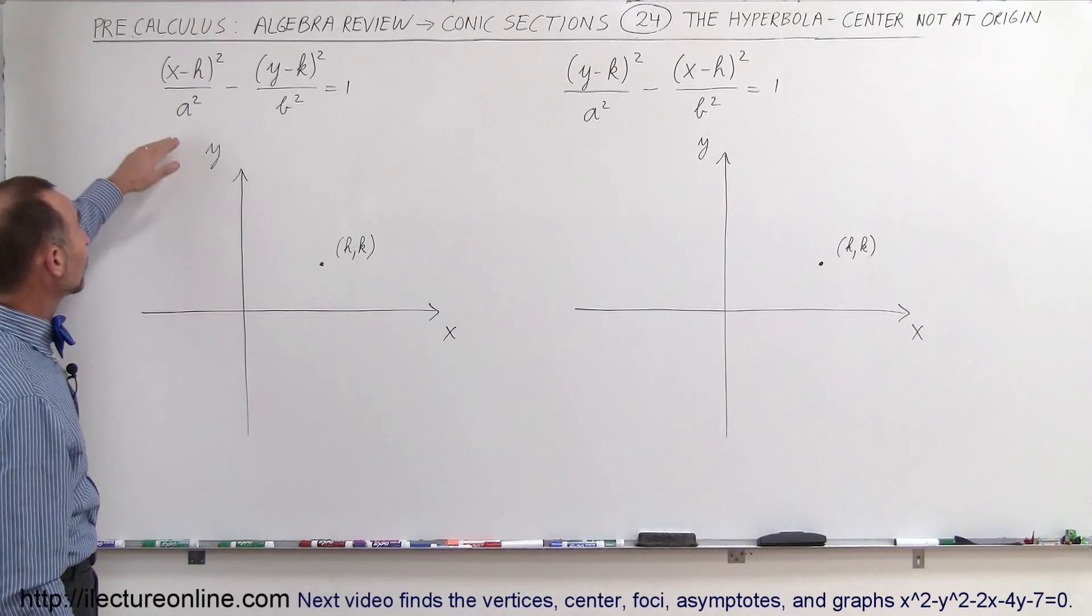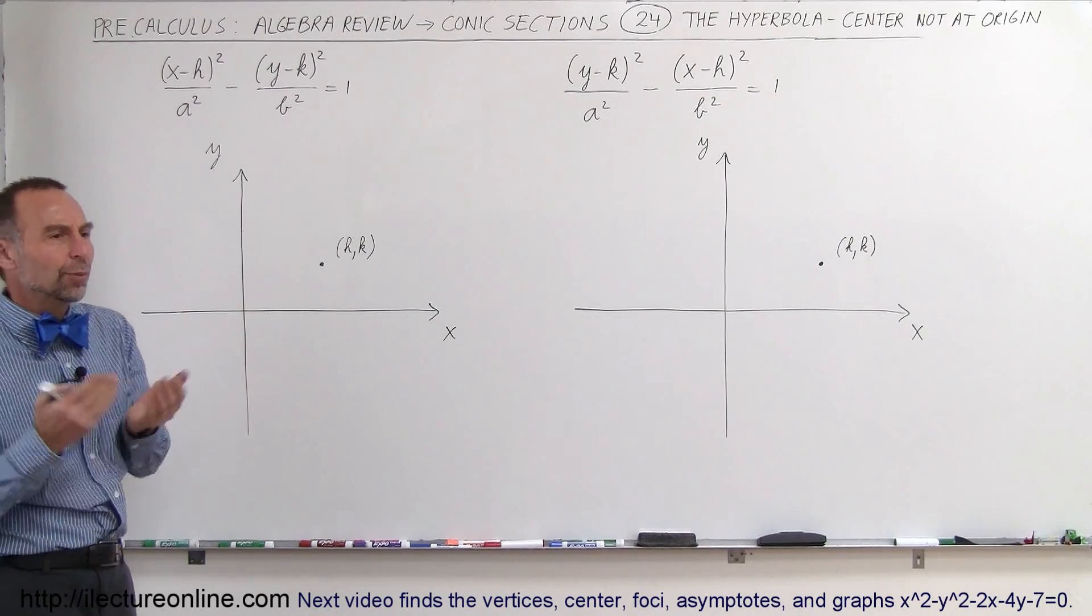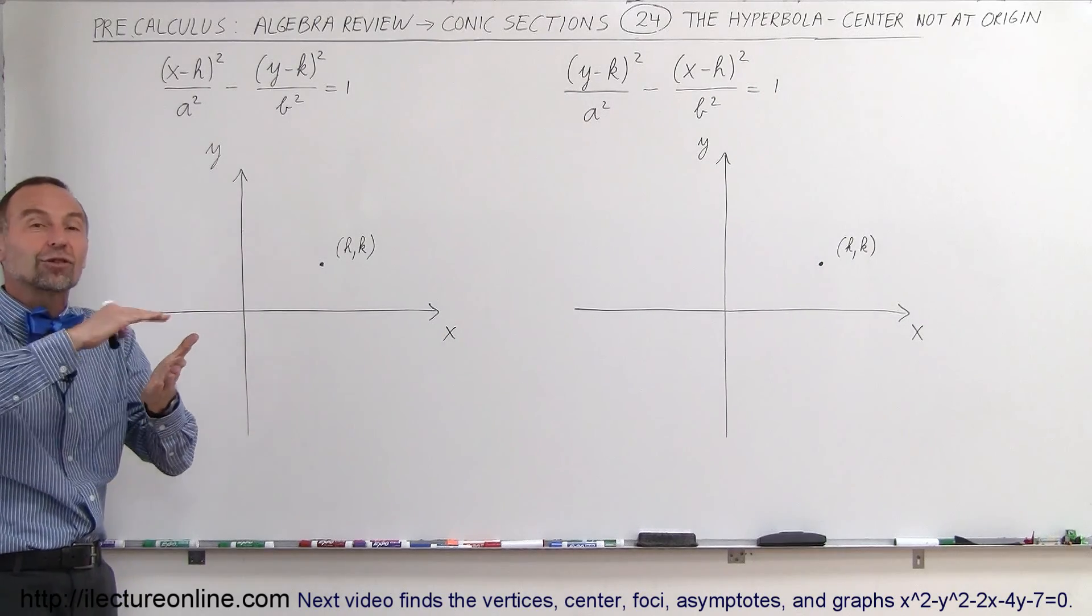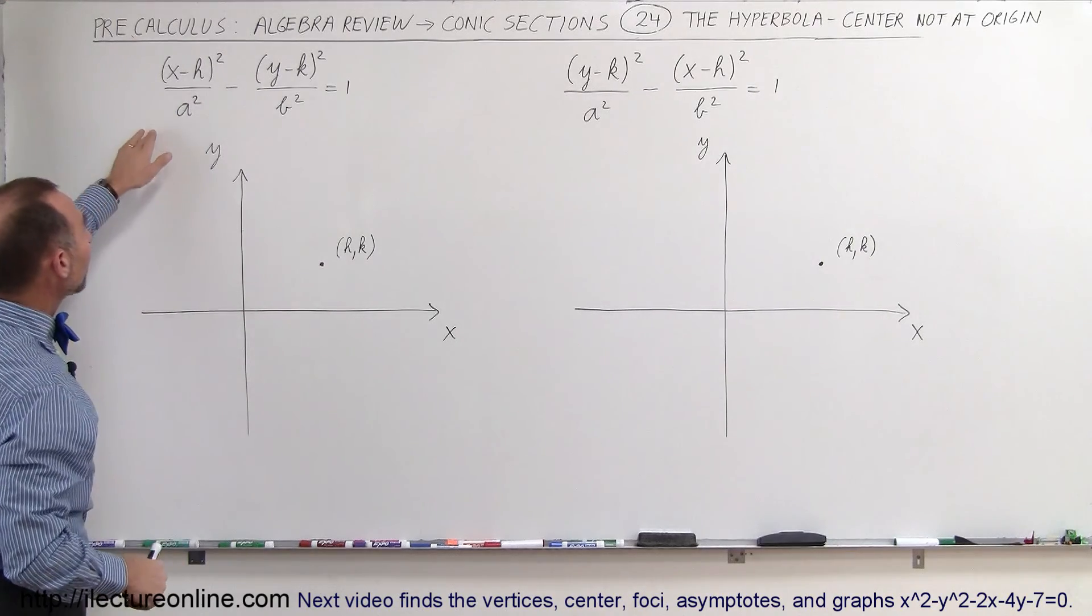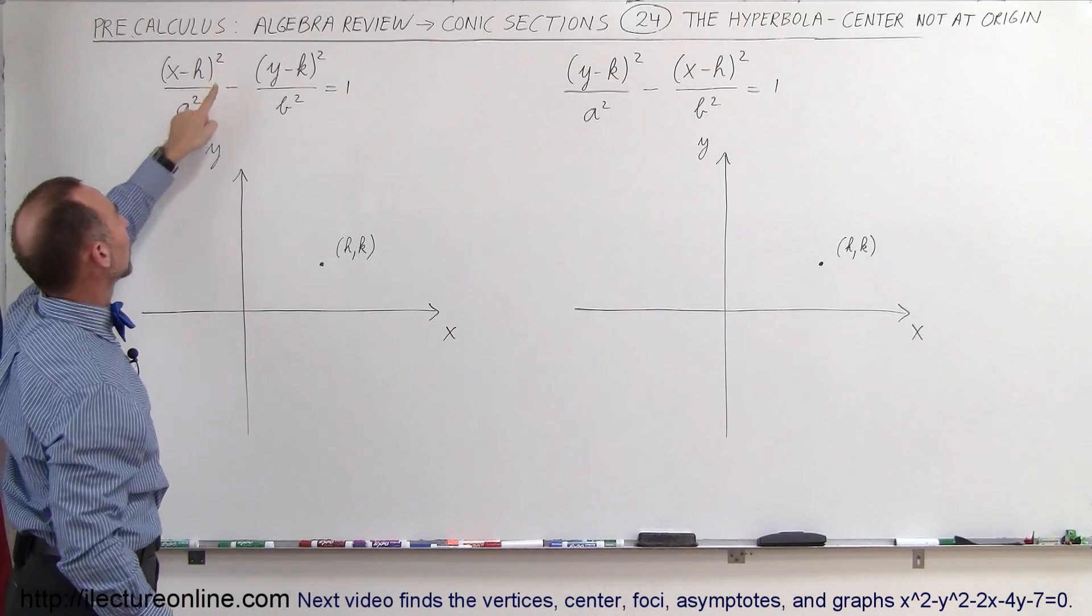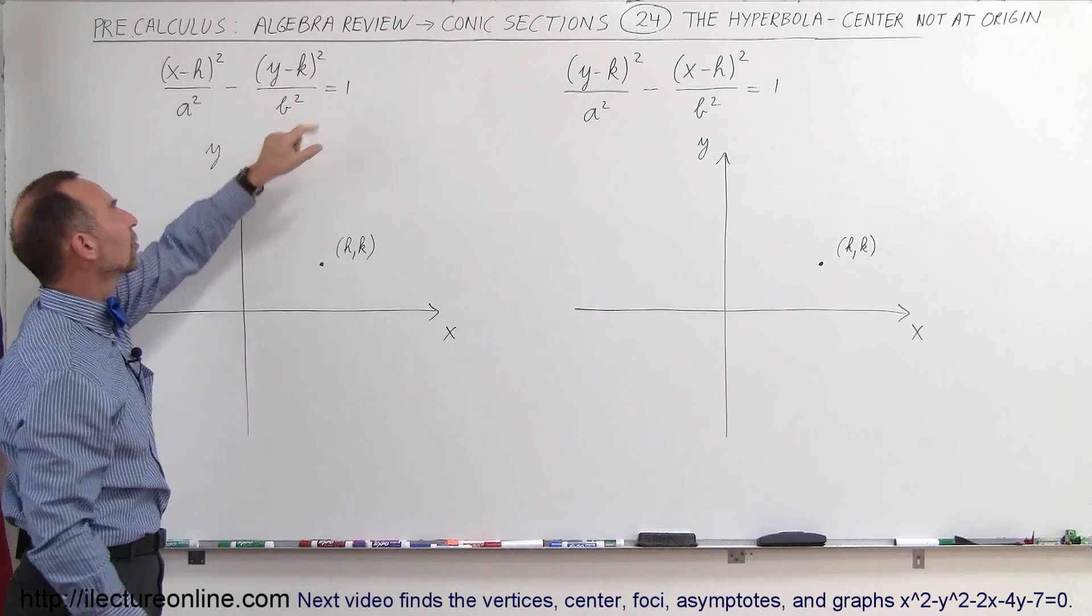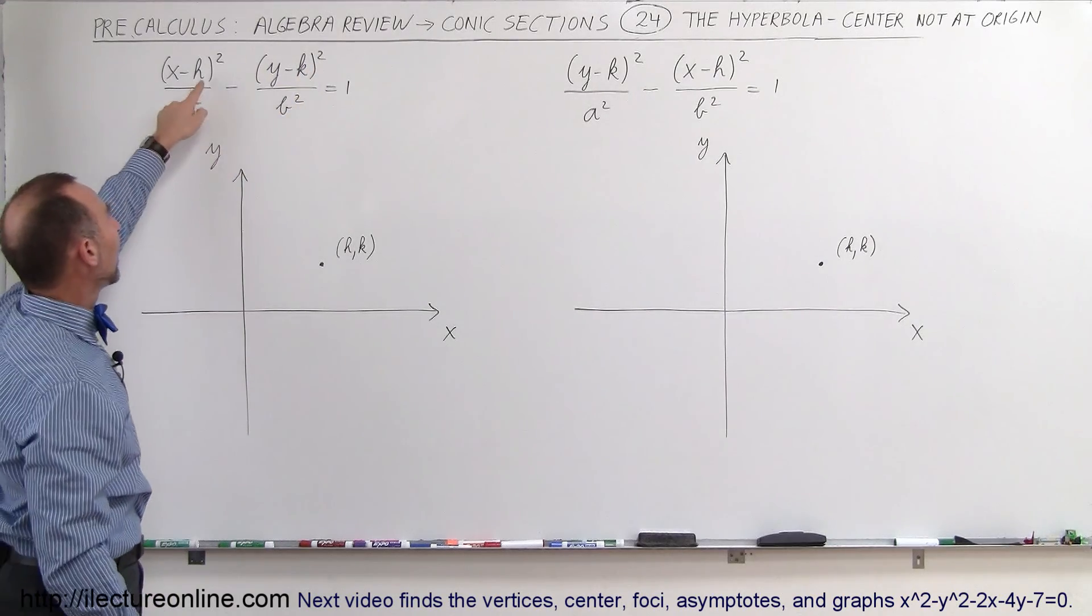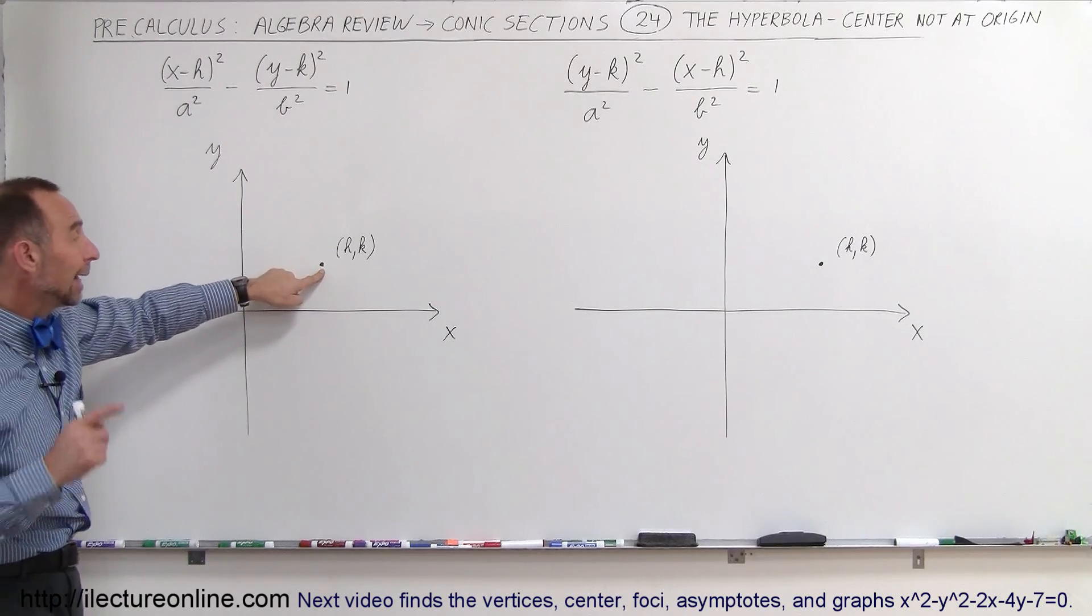So the general equation for a horizontally oriented hyperbola - but what do we mean by horizontally? We mean the transverse axis is horizontal, so that it opens up this way. If it's offset, you can see that the general equation now becomes x minus h quantity squared over a squared minus y minus k quantity squared over b squared equals 1. So it's offset by h,k - in other words, the center of the hyperbola will be located at h,k.